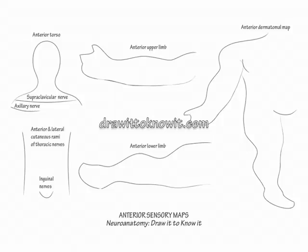Anterior cutaneous rami exist at each spinal level and are named in reference to the nerve root that supplies them. The inguinal nerves specifically are the iliohypogastric, ilioinguinal, and genitofemoral nerves.